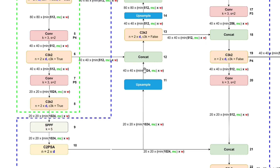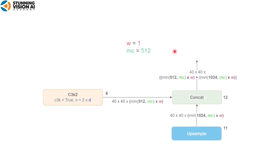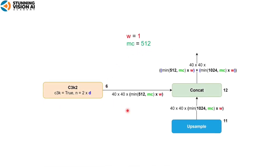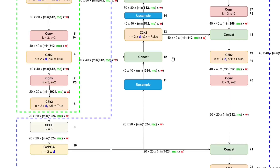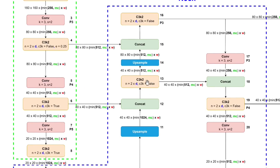The upsampled feature map is combined with features from the C3K2 block using concat. When using concat, the number of channels is summed while the resolution remains unchanged. For example, using YOLO 11L: the output of the C3K2 block is 40×40×512 and the upsample output is 40×40×512, giving a concatenation result of 40×40×1024. The following C3K2 block's feature map resolution is then upsampled to match the resolution of the next C3K2 block, and concat combines those upsampled features with the features from that block.